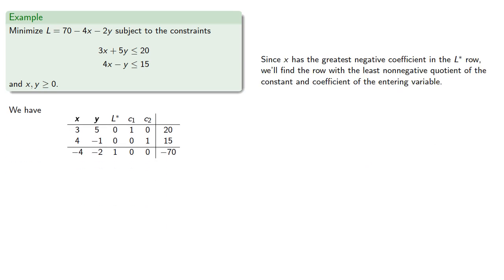Since x has the greatest negative coefficient in the L star row, we'll find the row with the least non-negative quotient of the constant and coefficient of the entering variable. This is in the second row, so we'll pivot on that entry.